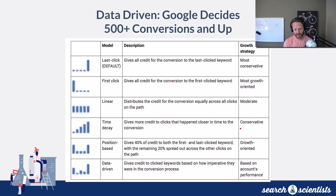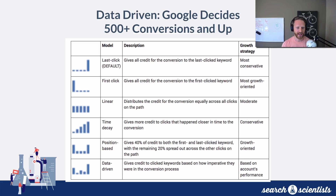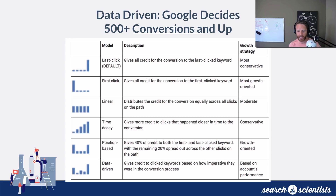Finally there's something called data-driven, which is Google's machine learning algorithm deciding how to attribute your conversion. It could be completely seemingly random, but basically Google decides what the most impactful thing was. For example, if on the first click they clicked on your website like 30 times and had a lot of engagement, Google probably weighs that a lot more than just seeing a display ad and then converting. That's Google's black box, and it's really only for campaigns and accounts that get at least 500 conversions a month.